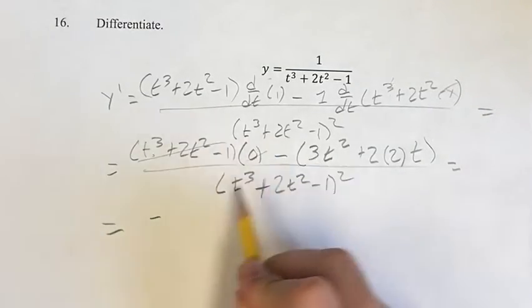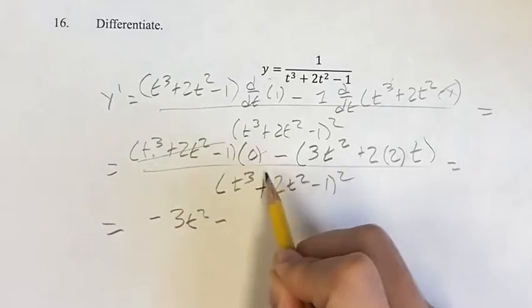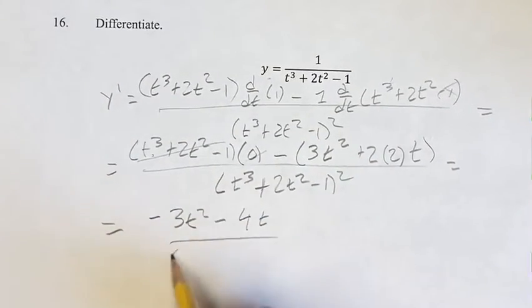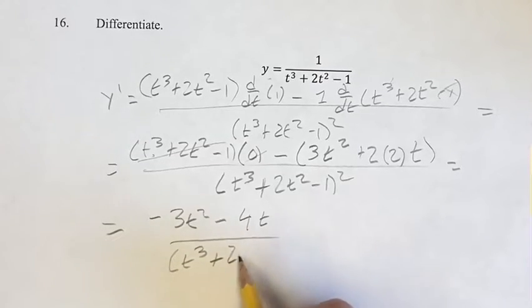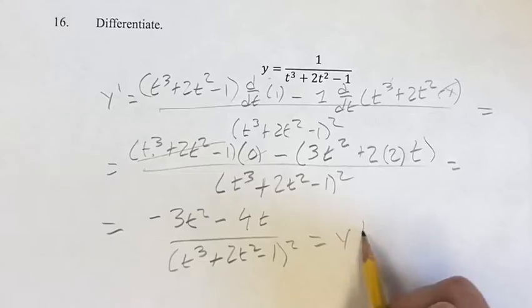We get negative 3t squared minus 4t over t cubed plus 2t squared minus 1 squared. And that is your derivative.